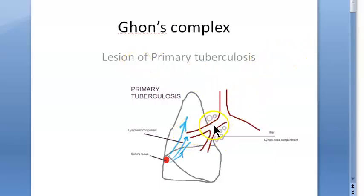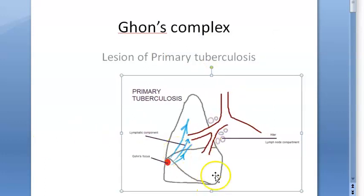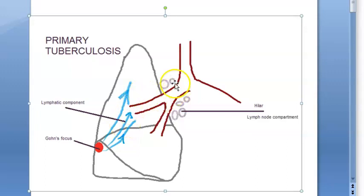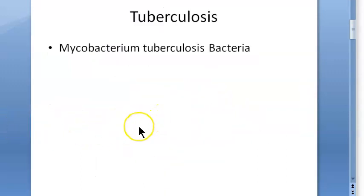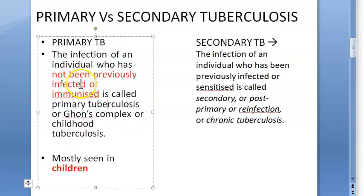When the TB bacteria enters for the first time, it causes primary tuberculosis. There will be a Ghon focus in the lungs, a lymphatic component, and hilar lymph nodes — together called the Ghon complex. This is seen only in children because it is a feature of primary tuberculosis, and can occur in the abdomen as well.